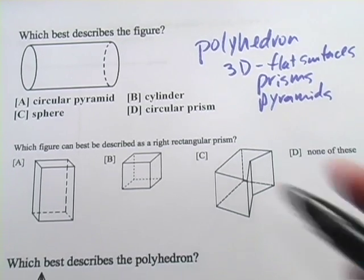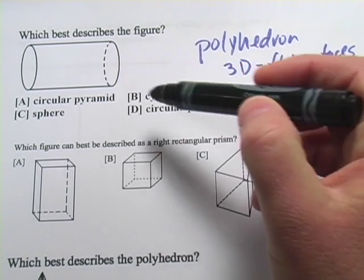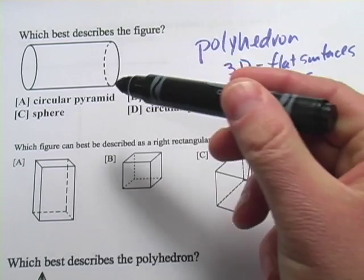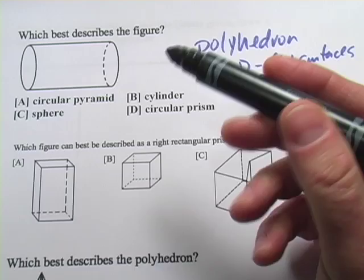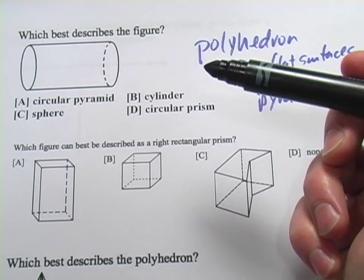The first one says, which describes this figure? And I hope you can kind of tell from looking at this that this is basically like a can of soup or something like that. And we're just being asked to find the name of it.